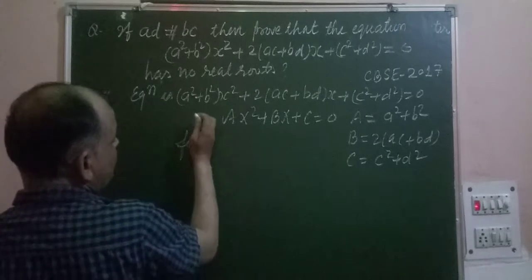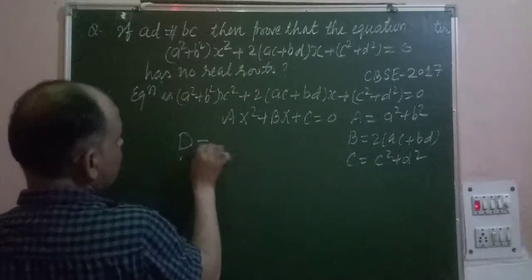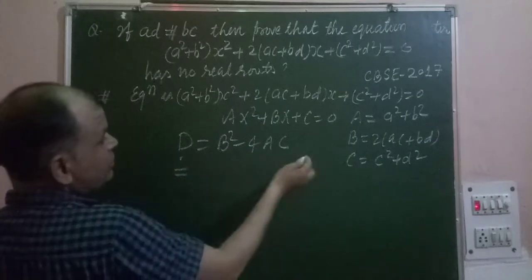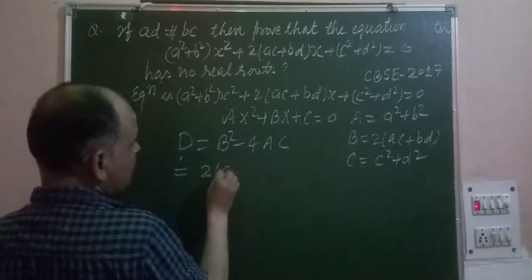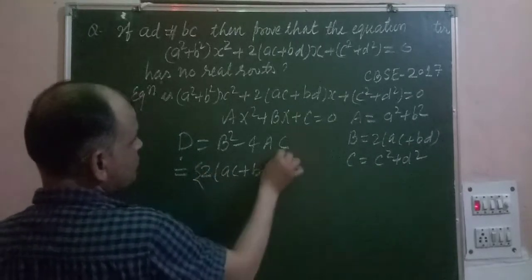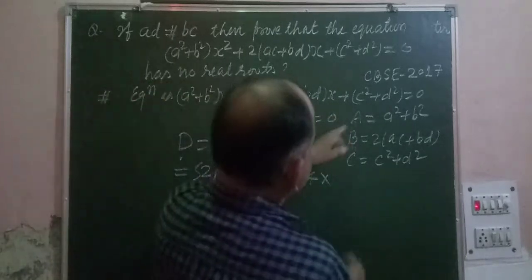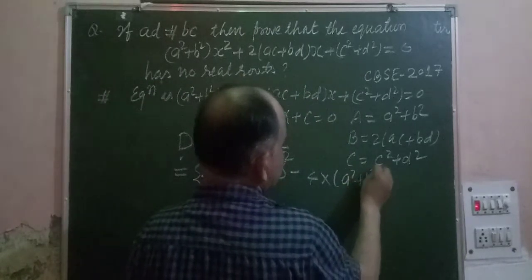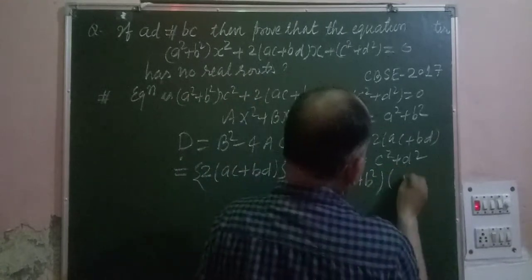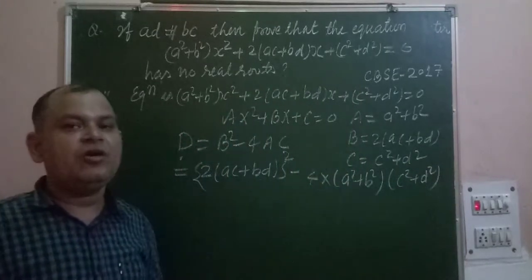Now we want to find the discriminant, which is D = b² - 4ac. Here a = A² + B², b = 2(AC + BD), and c = C² + D². Let us now solve and expand the discriminant.